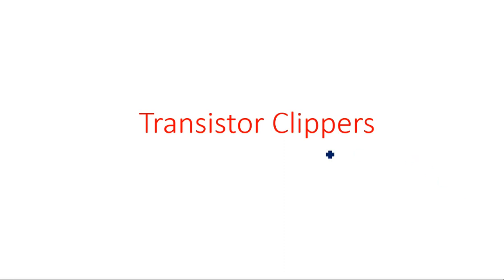In this video you are going to learn about transistor clippers. Previously I explained nonlinear clippers made up of diodes — series type, shunt type, and noisy clippers. A transistor clipper is a nonlinear device used to clip the portion of a sinusoidal input signal. We have seen diode configurations; now the transistor configuration is used to clip the signal on both the positive and negative sides of the input signal.